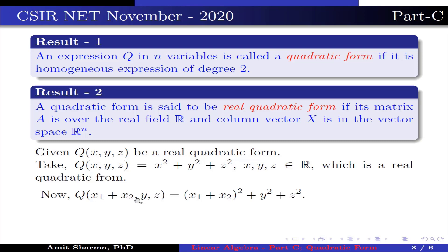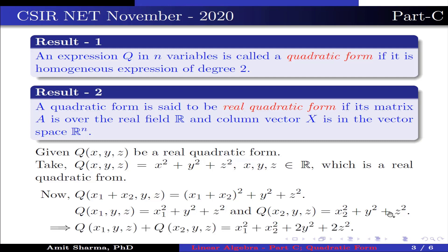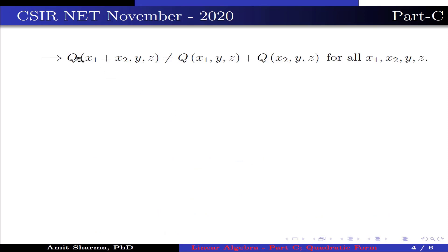Now Q(x1+x2, y, z) = (x1+x2)² + y² + z², while Q(x1, y, z) = x1² + y² + z² and Q(x2, y, z) = x2² + y² + z². This implies Q(x1, y, z) + Q(x2, y, z) = x1² + x2² + 2y² + 2z², which is not equal to Q(x1+x2, y, z) for all x1, x2, y, z. Therefore, Option 1 is false.